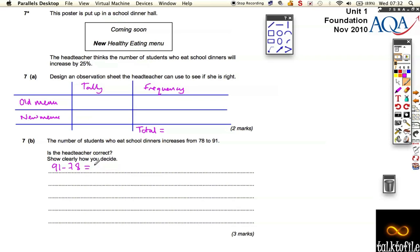if you do a subtract, if you do 91 minus 78, you think there's a 13 increase, isn't there? So what we need to do is find out whether 25% of 78 is 13. So there's been an increase of 13.